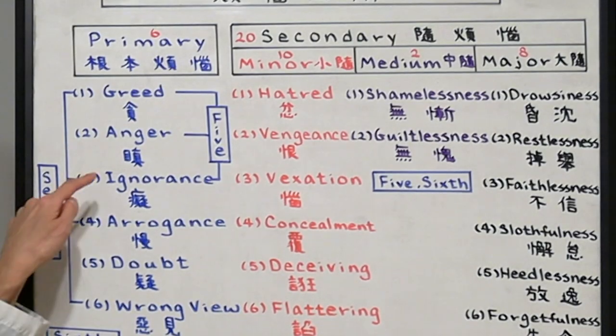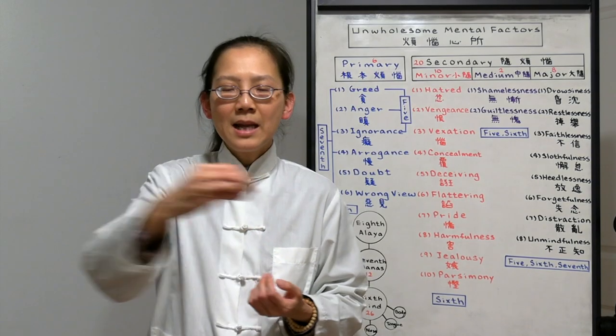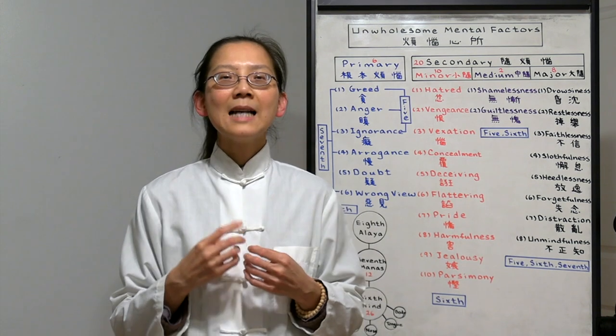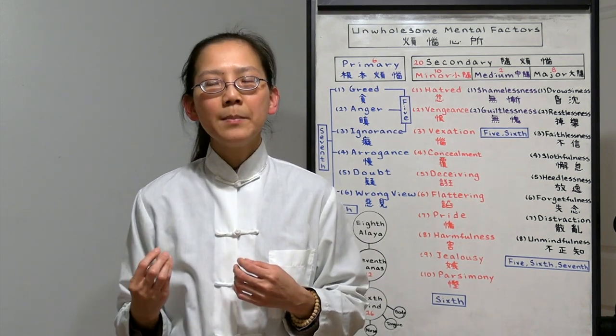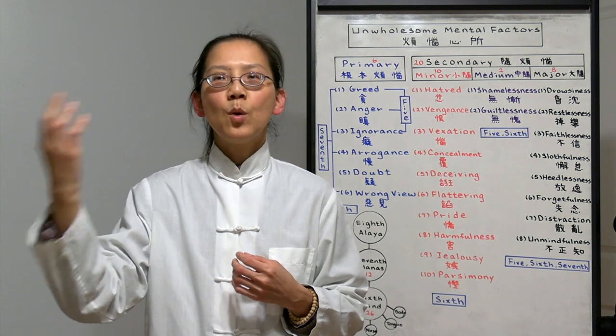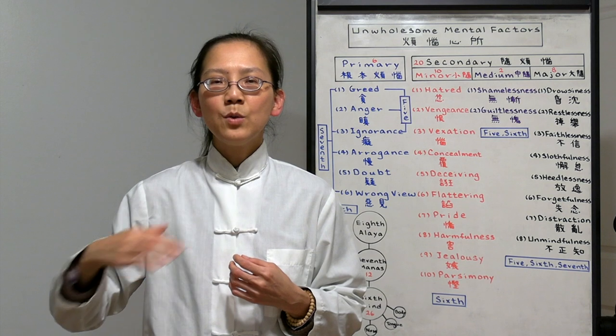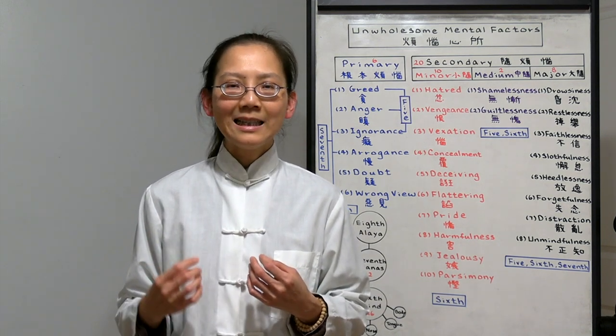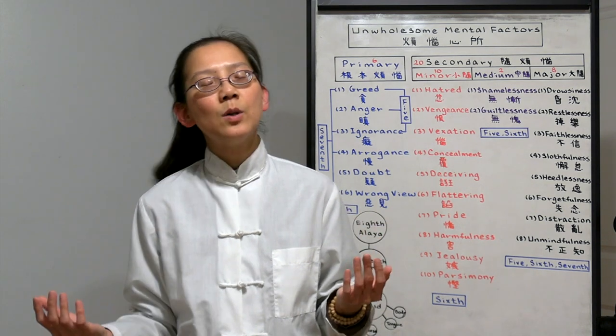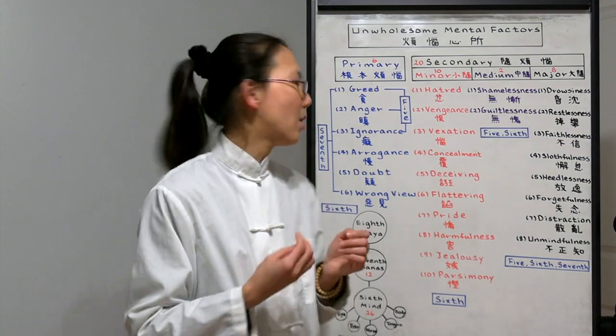Number three is ignorance. Because we think there's a real me, we do everything dependent on the self. That's the biggest ignorance. And we do not believe in karma. Doing wholesome deeds will bring good retribution. And unwholesome deeds will give you unwholesome retribution. When we do not believe in karma, we will likely be worried and fearful about everything. Because we don't understand karma. That's all ignorance.